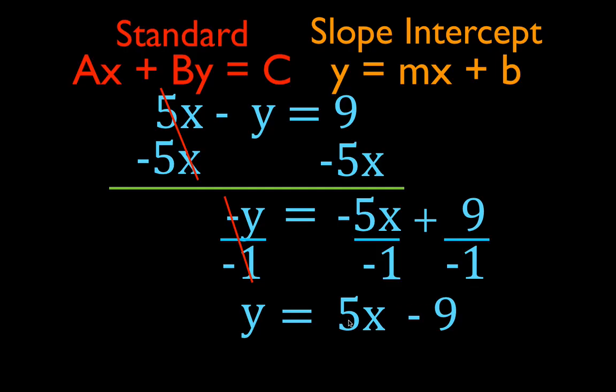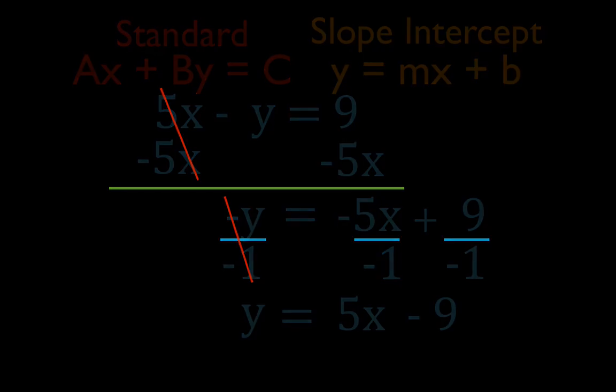So there you go — we did 4 different examples and tried to cover a whole range of possibilities. The two steps are: add the opposite of the x-term, then divide by the number in front of the y. I hope you found that helpful. If so, you can subscribe to my channel to get all my physics, chemistry, and math videos, give this video a thumbs up, or leave a positive comment below. Thank you very much for watching.